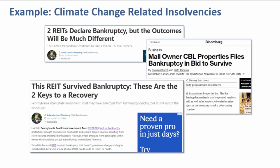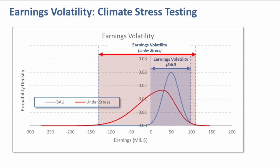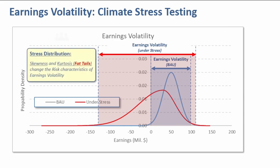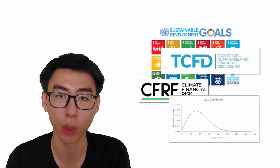This is well documented by UK banking regulators in the Climate Financial Risk Forum. Insolvency due to climate change is not imagination. It has already happened. This is an example of stress testing on earnings volatility. This is the earnings distribution without stress and under stress. The skewness and kurtosis under stress changes the characteristics of earnings volatility. From actuarial science perspective, all these initiatives boils down to the loss distribution that we need to manage.